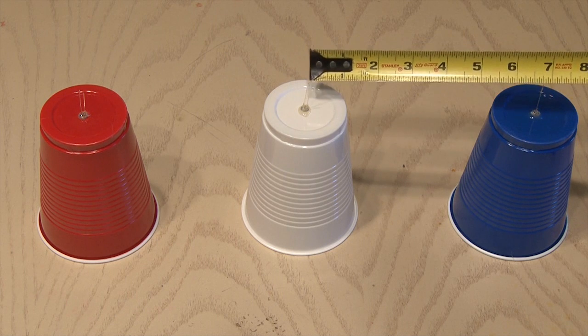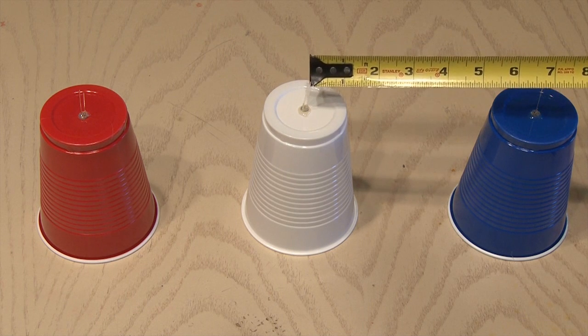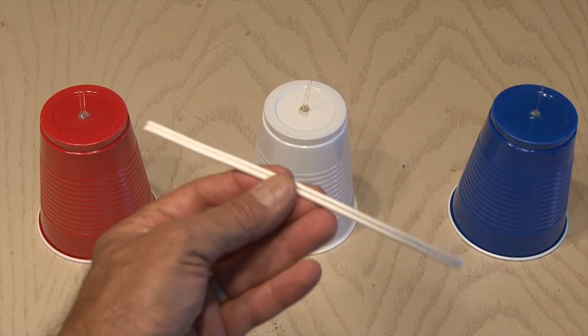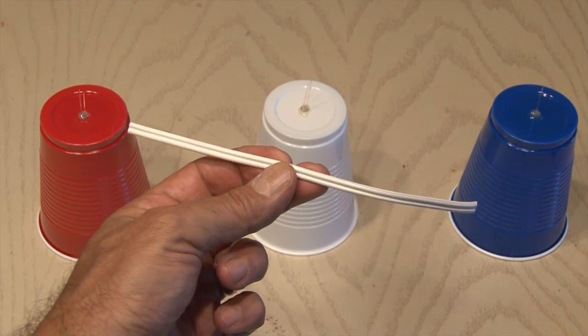I moved the cups apart and figured 7 inches is about enough. That'll be the spacing in between each of my cups. Using some old white lamp cord I had, I cut a bunch of pieces to fit in between each cup.